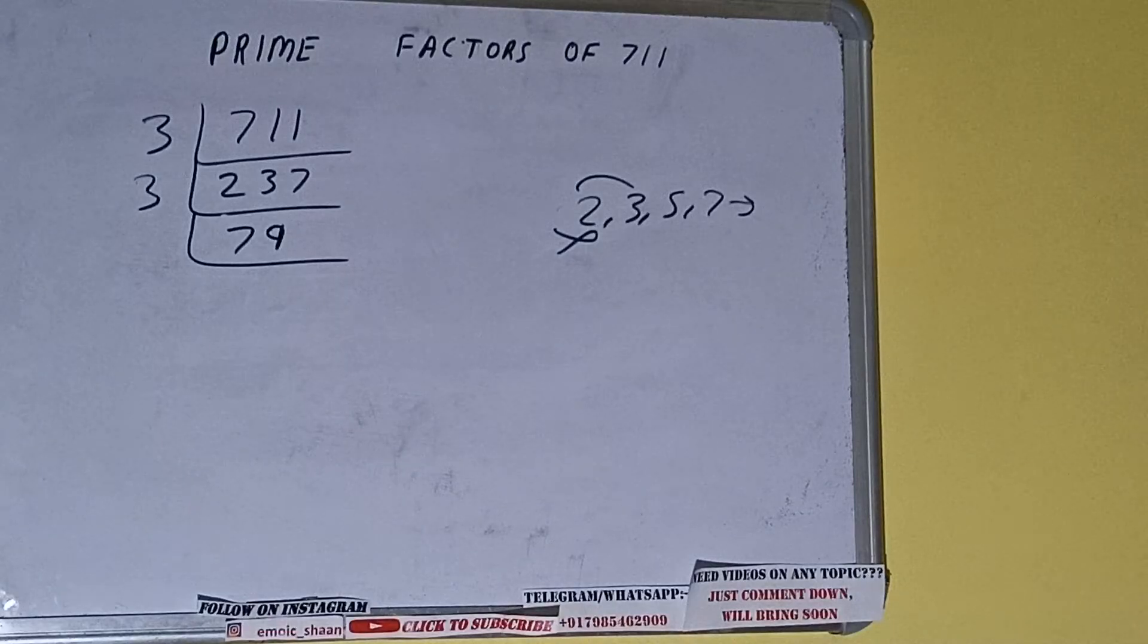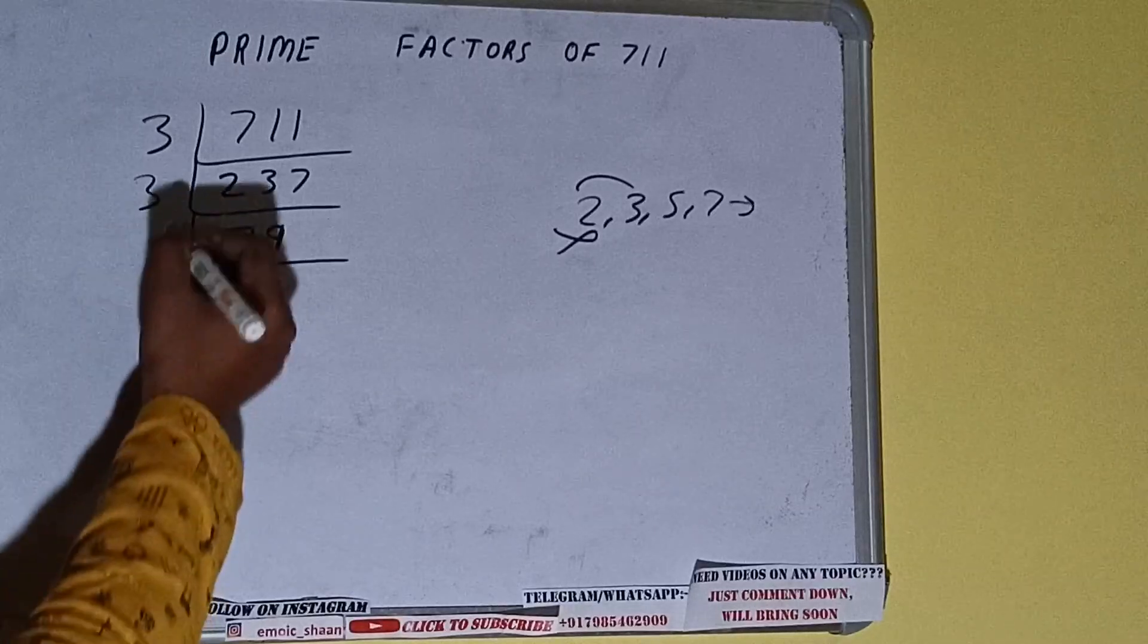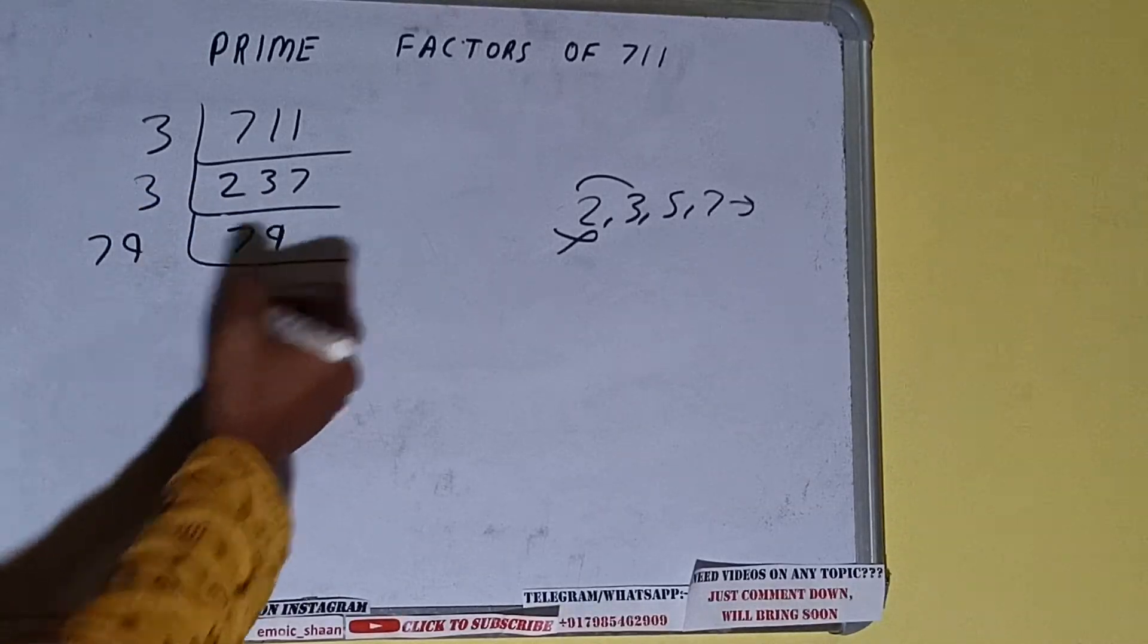79 is not divisible by 3, and also 79 is a prime number. So it is only divisible by itself. That is 79, and once we do so we'll be getting 1.